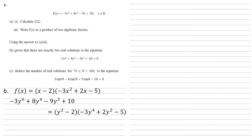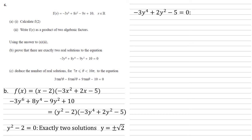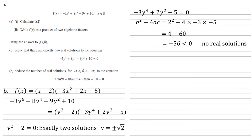To find solutions we set each bracket equal to zero. If y squared minus 2 equals zero, that gives exactly two solutions: y equals plus or minus root 2. For the second bracket, as it is a quadratic in y squared we use the discriminant b squared minus 4ac. Substituting the coefficients gives 2 squared minus 4 times negative 3 times negative 5, which is 4 minus 60, equalling negative 56. Since this is less than zero, there are no real solutions from this bracket. So the only two solutions are plus or minus root 2.